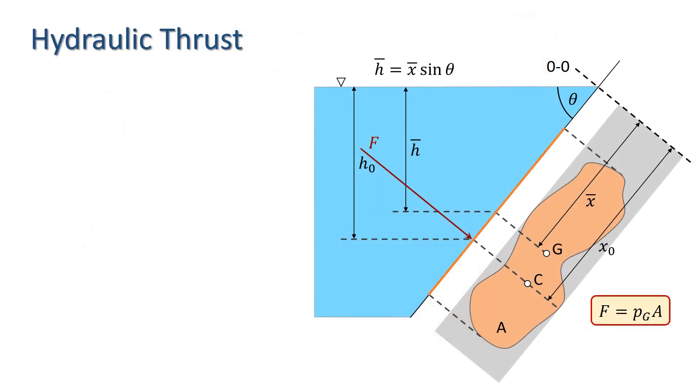Coming back to our irregular area A, we established that F X0 equals rho G sin theta times I0, and earlier we found that the magnitude of the thrust F is rho G sin theta X bar times A. Thus we can find an expression for X0 in terms of the second moment of area about OO, X bar and A.